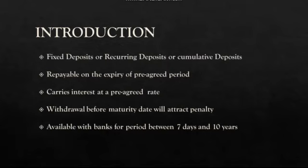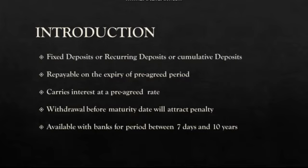In a term deposit, for a particular period you deposit an amount in your account. When your period is complete, the bank repays you. If you have a fixed deposit account, you sign an agreement indicating the amount and rate of interest. Once the period is complete, you can withdraw the amount. If you withdraw early, the bank charges a penalty.